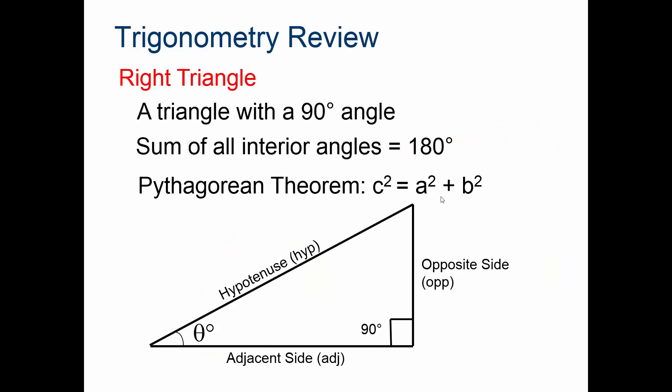Trigonometry — just a brief overview of it. For a right triangle, a triangle with a 90-degree angle, denoted by the symbol in the corner, the sum of all interior angles has to equal 180 degrees. The Pythagorean Theorem states that c squared equals a squared plus b squared — so if you know one side, the length of that side squared plus the other leg squared equals the hypotenuse squared.